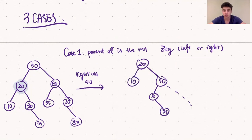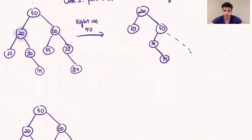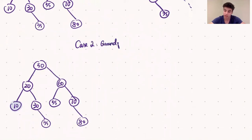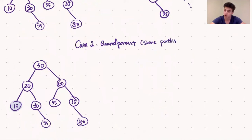The next case is when the root is the grandparent of the node we want to splay, and we can reach that grandchild by taking two of the same direction paths down the tree — either going left then left, or right then right. We call this the zig-zig case.